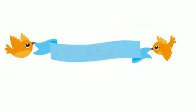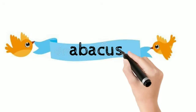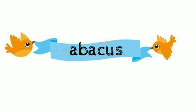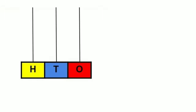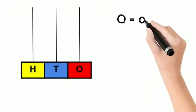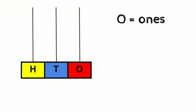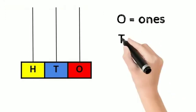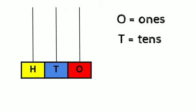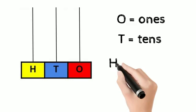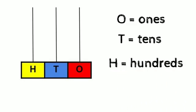Our next topic is drawing an abacus. An abacus is a pictorial representation of place values. This is a 3 digit abacus. O is for ones, T is for tens, and H is for hundreds. This is how you draw a 3 digit number on an abacus. Okay.